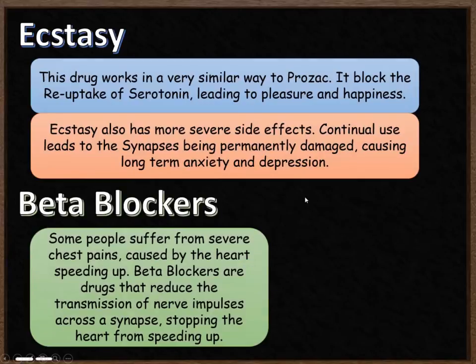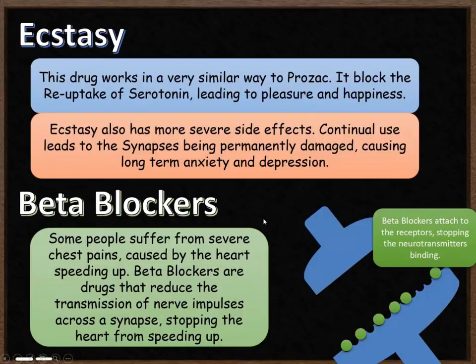The other drug to know about is beta blockers. Some people suffer from severe chest pains caused by the heart speeding up. When the heart speeds up, it uses oxygen quickly and starts anaerobic respiration, causing chest pains. Beta blockers reduce the transmission of nerve impulses across a synapse and slow the beating of the heart. They work differently to Prozac and ecstasy — beta blockers bind to the receptors on the second neuron, stopping neurotransmitters from binding in the first place, slowing down nerve impulse transmission.